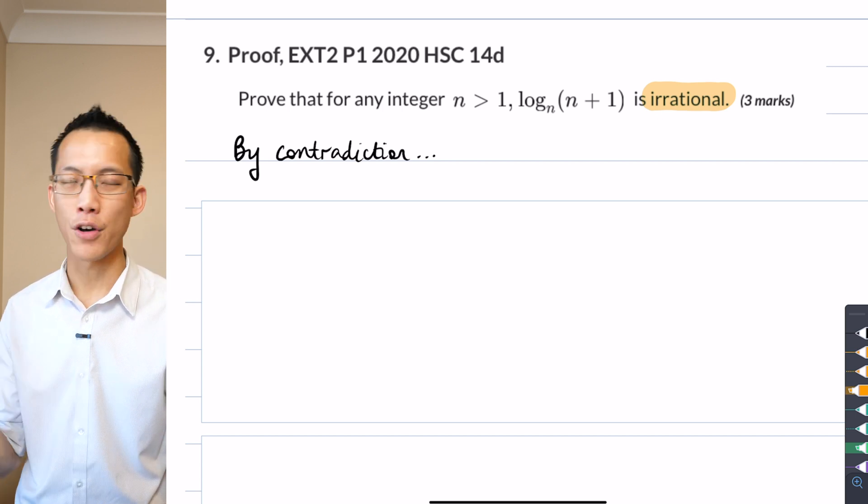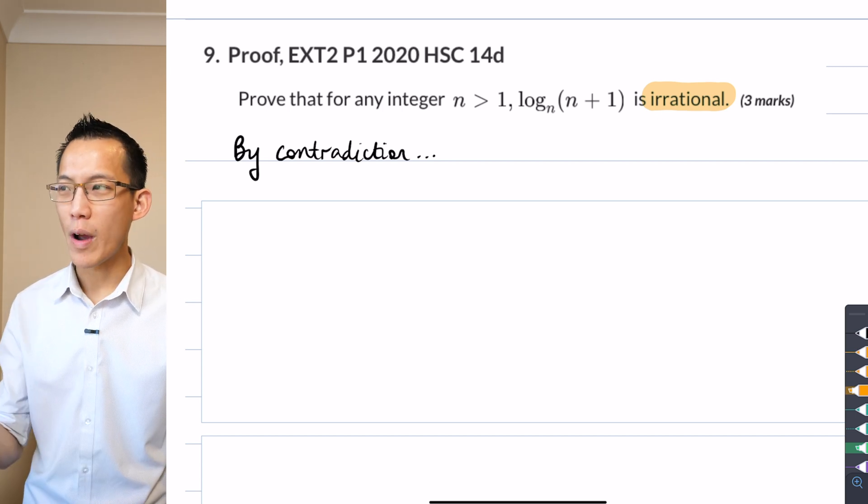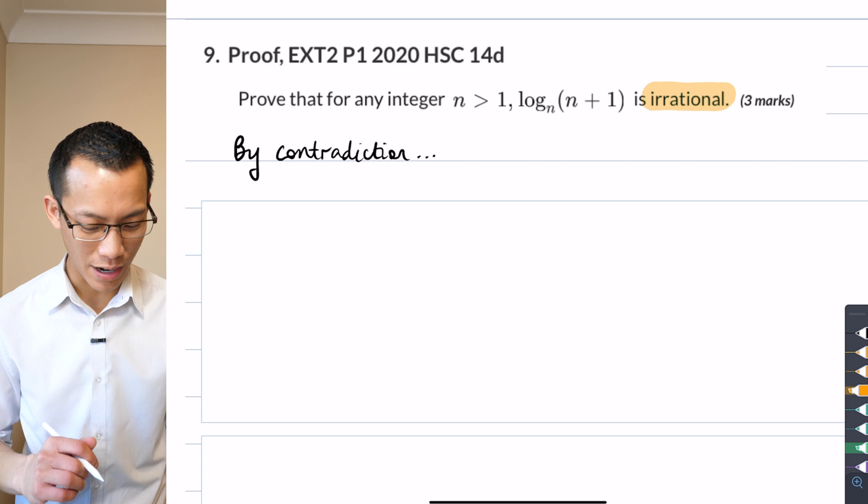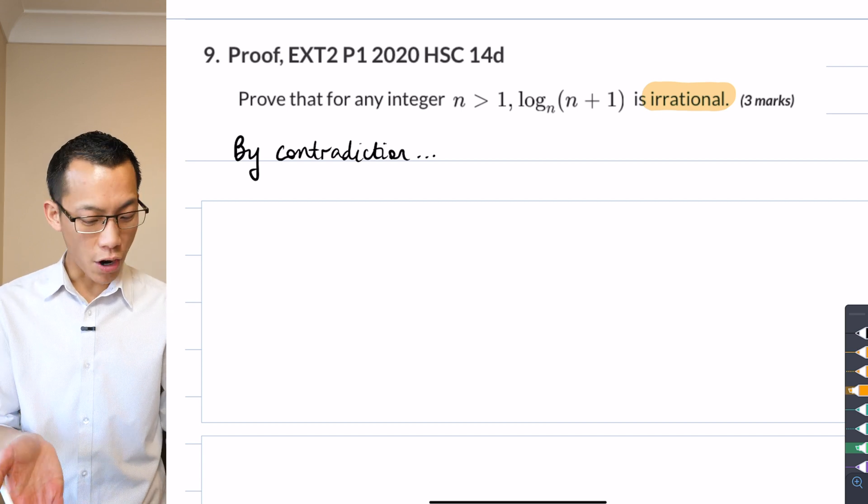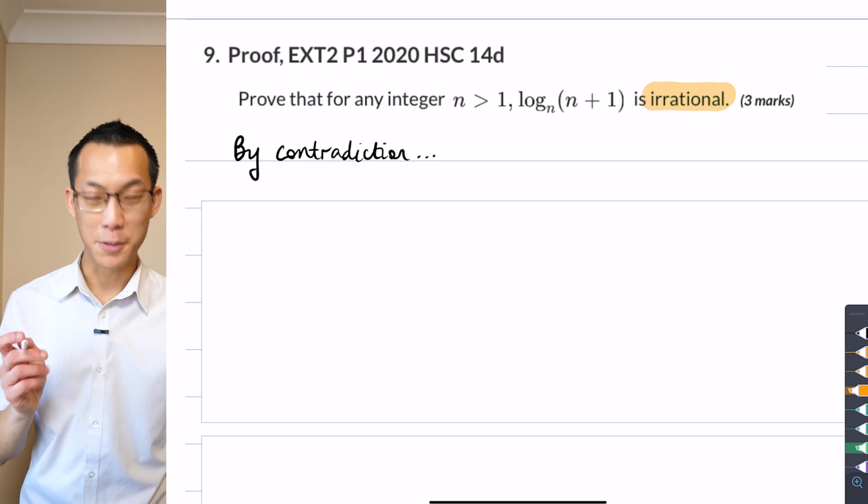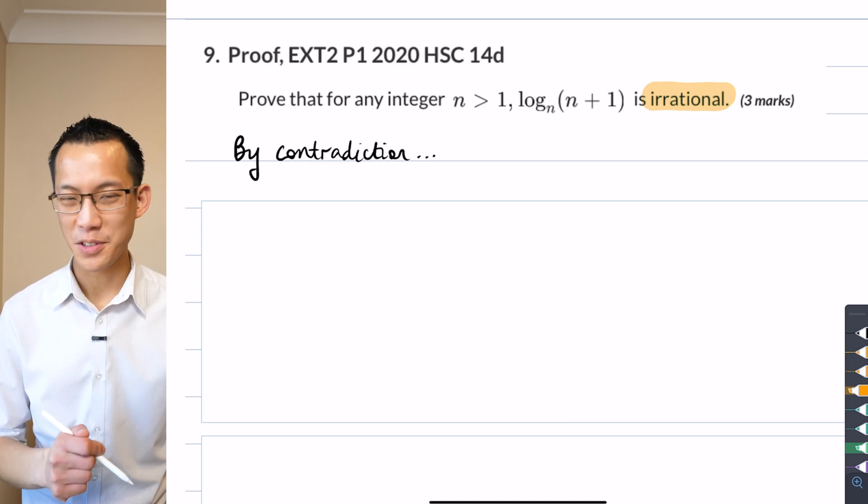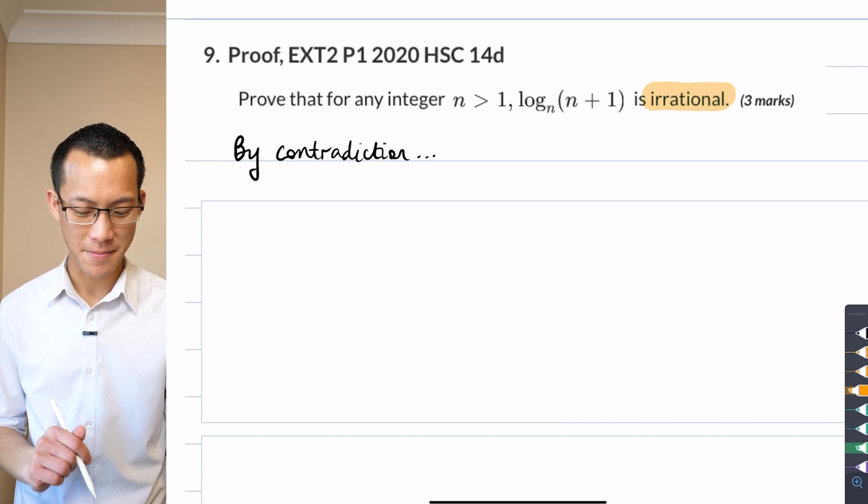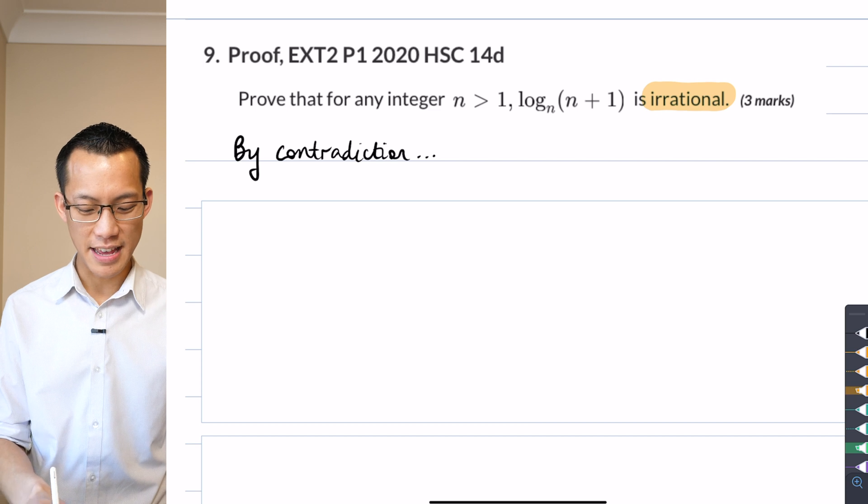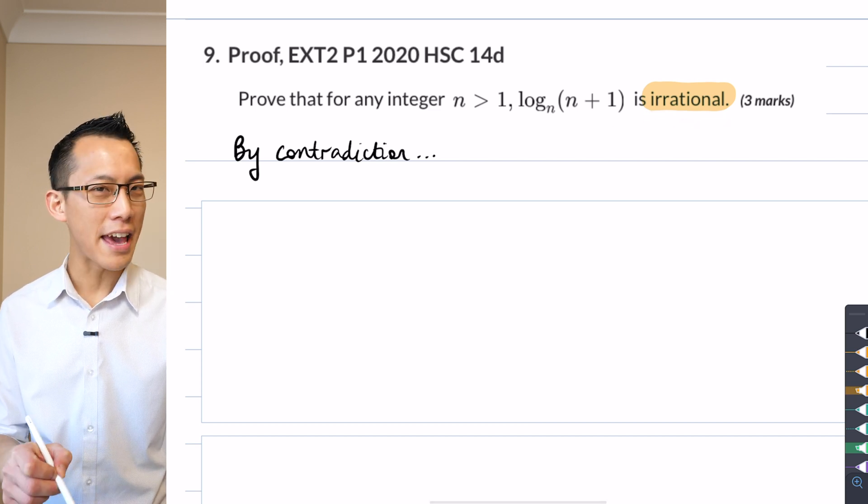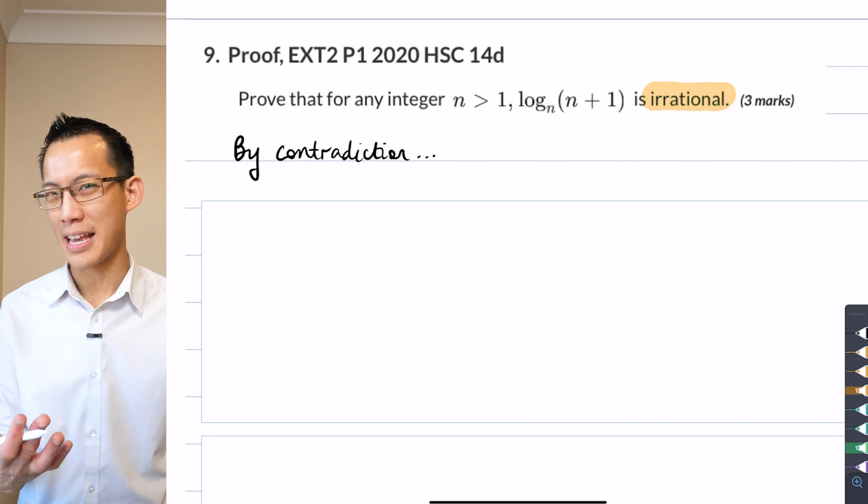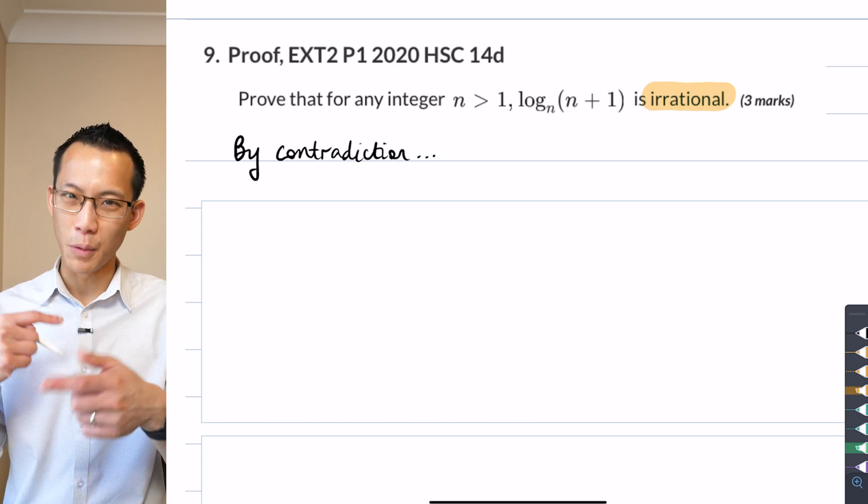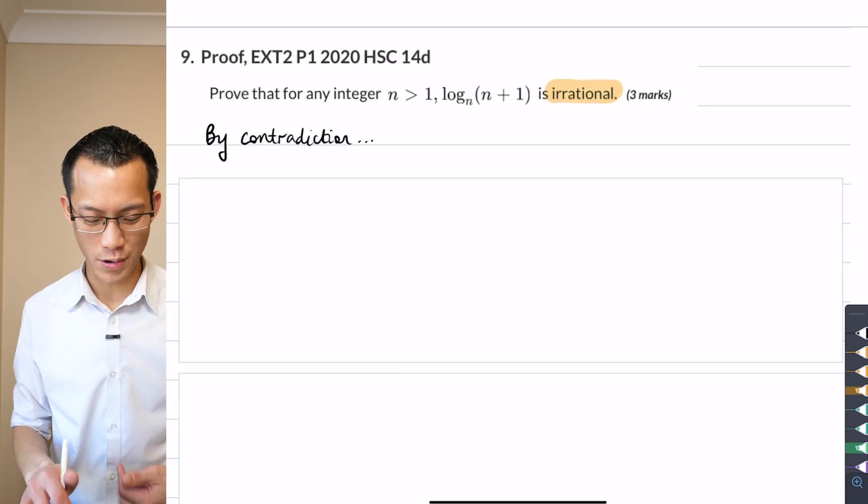What does irrational mean? It means you cannot express this number as a ratio of two integers. That's what it means to be irrational. We have loads of numbers like that, square roots of any numbers that aren't squares, the transcendental numbers like pi and e, those good guys, and a bunch of the logs are irrational, right?